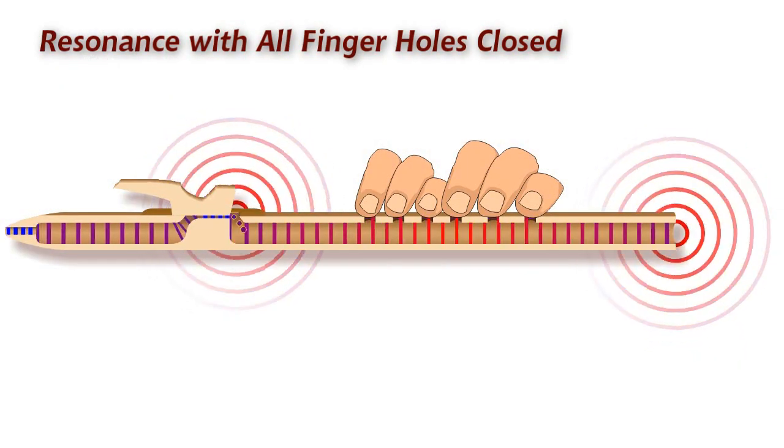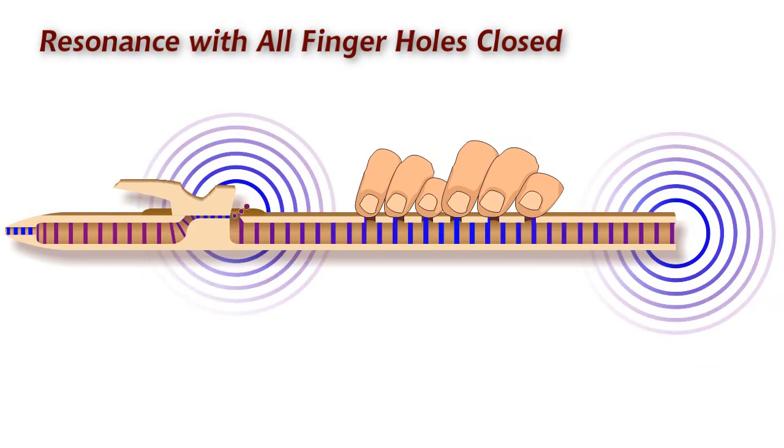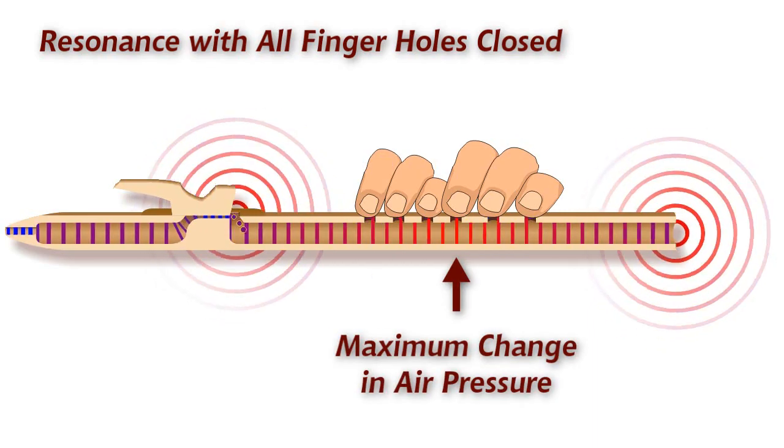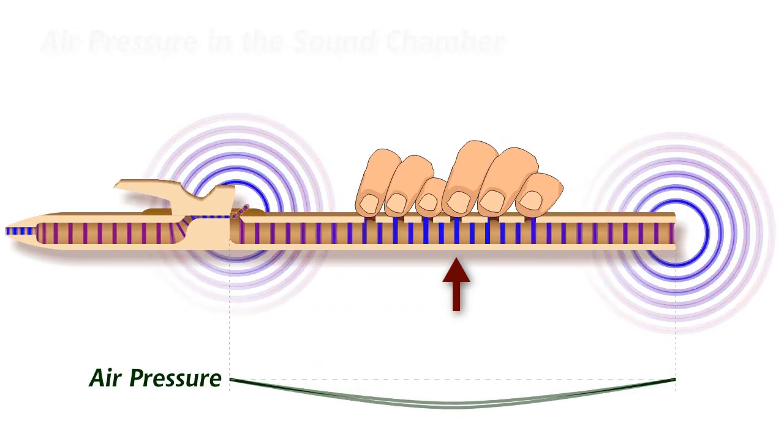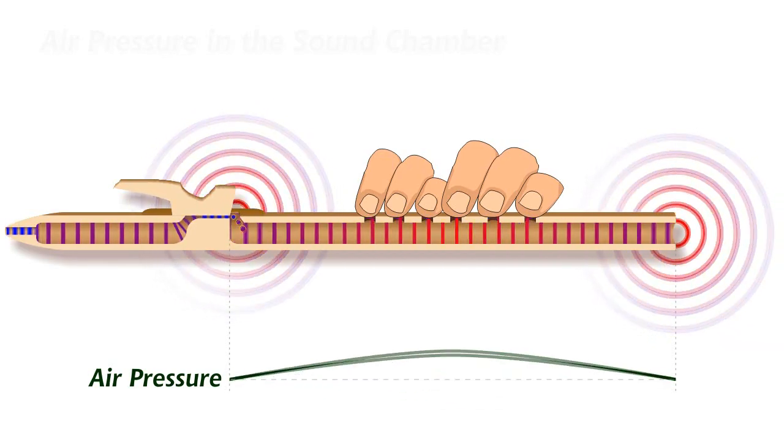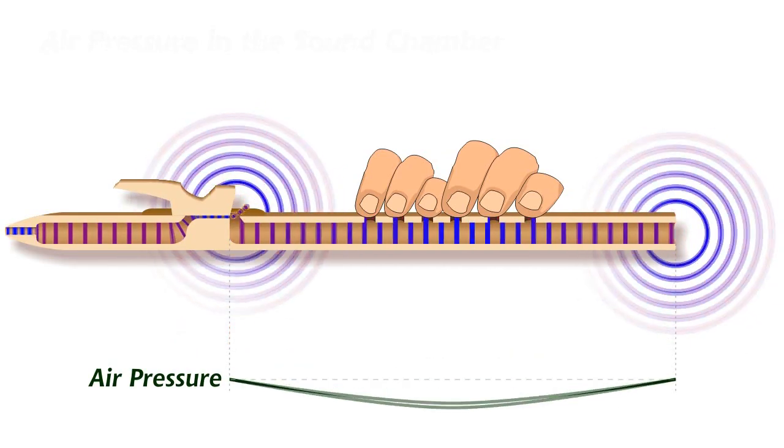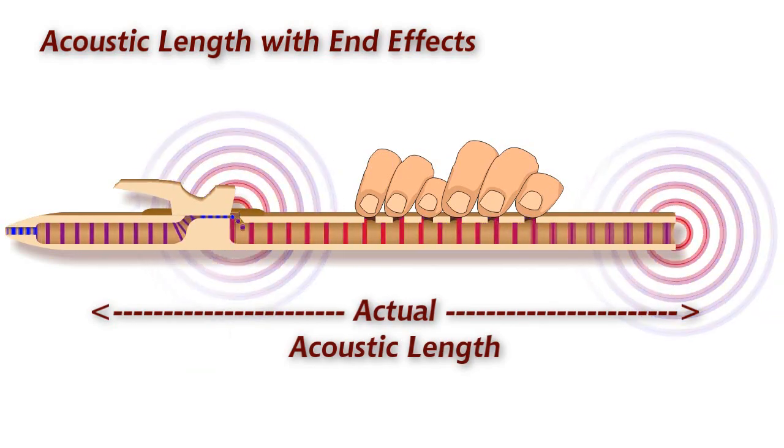Okay, back to the resonating flute with all finger holes closed. The way we've shown it is great for demonstration, but it's not quite accurate. We've shown the location of greatest change in air pressure right in the middle of the physical sound chamber, right under the fourth finger hole. Here I've added a graph of that air pressure. Now, the reason it's not accurate is that there's an acoustic effect that happens at each end of the sound chamber. It's called the end effect. When the ends of the sound chamber are open to the outside air, as they are with native flutes, the sound chamber gets acoustically lengthened. The reflections of the sound wave that happen actually occur beyond the physical ends of the sound chamber.